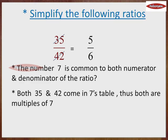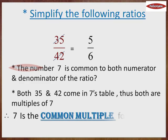So, by this, what we can conclude is that, 7 is basically the common multiple for the given ratio.